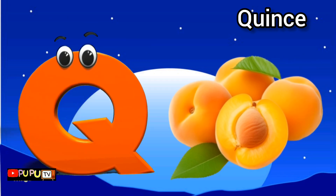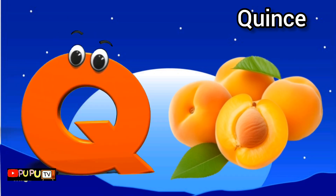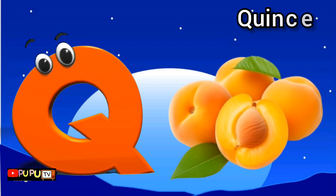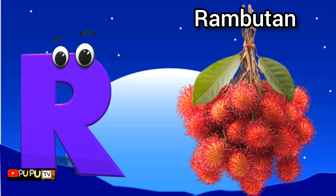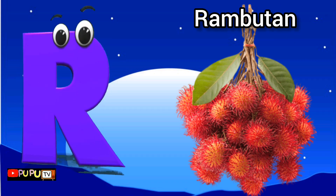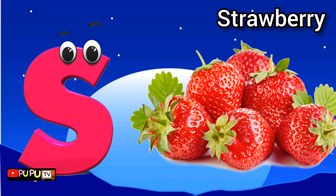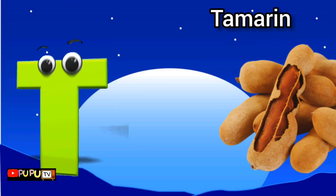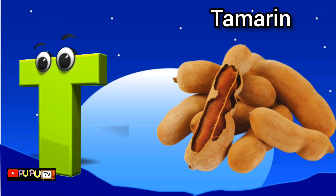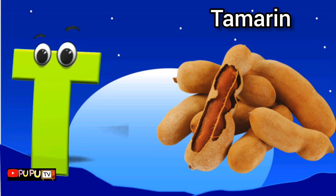Q is for quince, qu-qu-quince. R is for rambutan, r-r-rambutan. S is for strawberry, s-s-strawberry. T is for tamarind, t-t-t-tamarind.